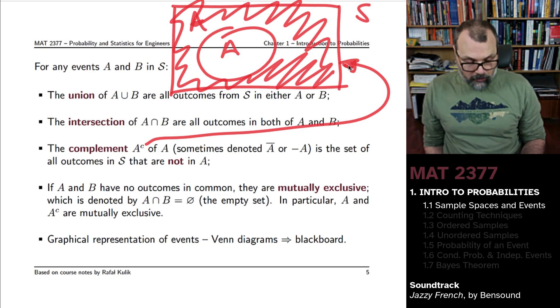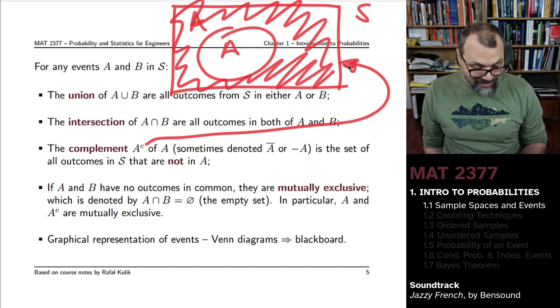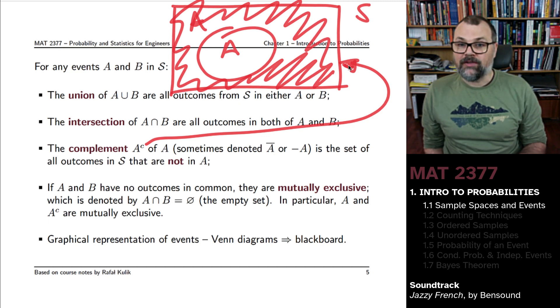There's many ways to denote it. Sometimes you'll see A bar, or minus A, or A^C. They all represent the same thing - the outcomes in S that are not in A.